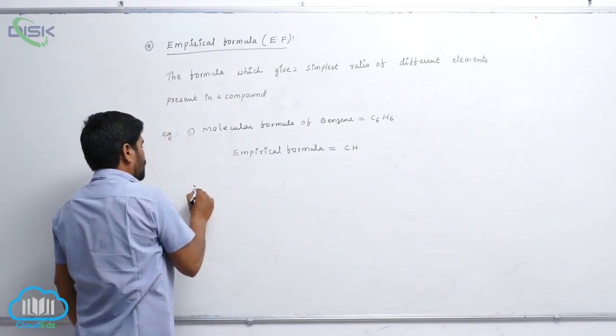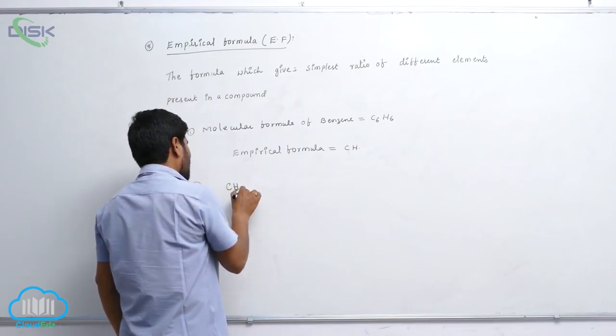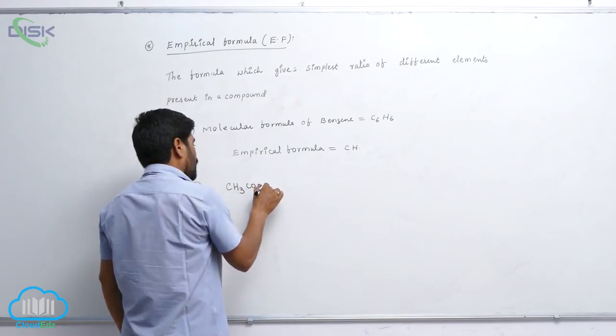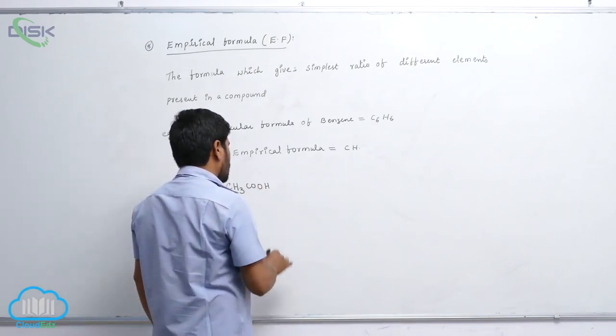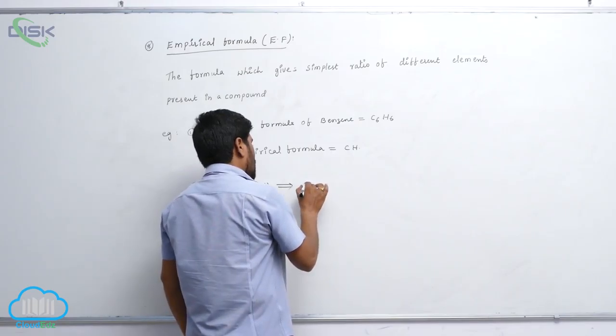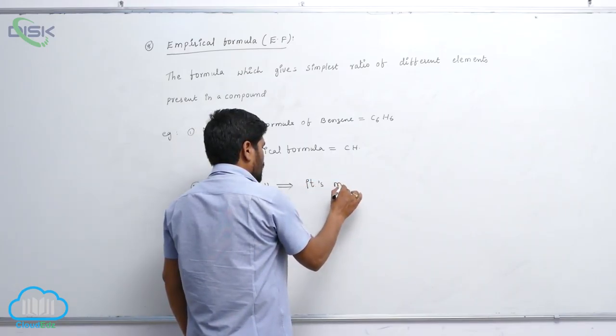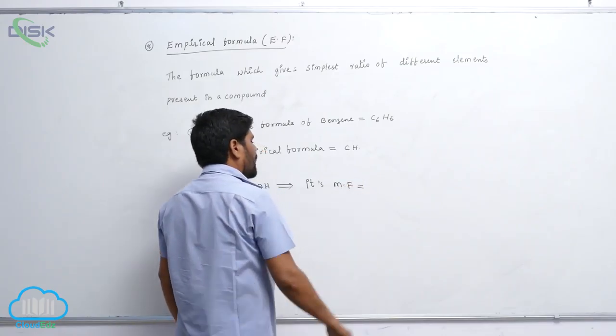Second example, you take which one? Acetic acid. CH3COOH. Okay. Its molecular formula is MF means molecular formula.